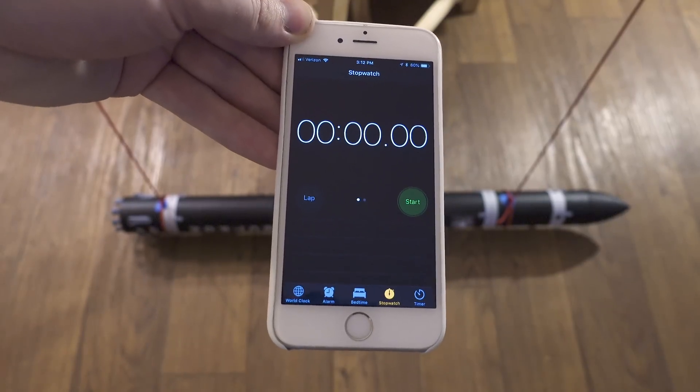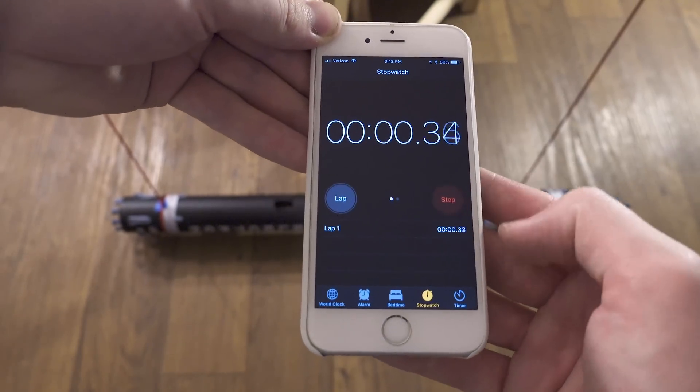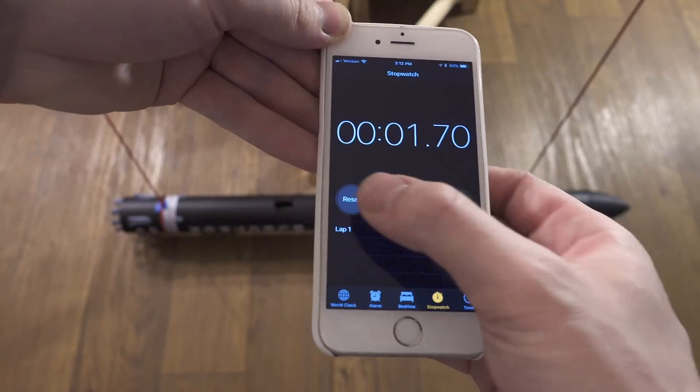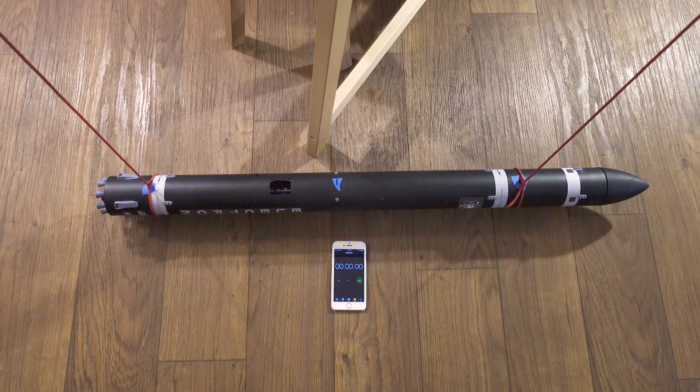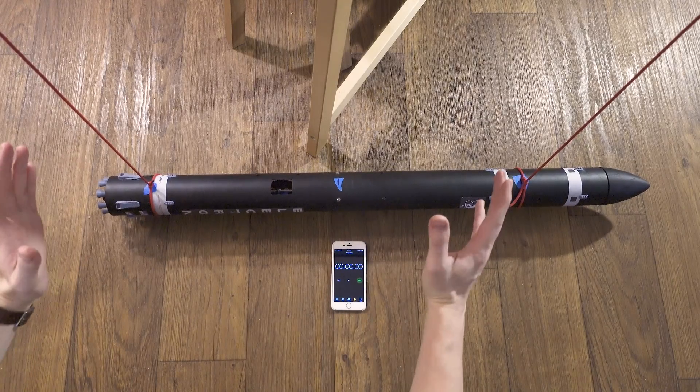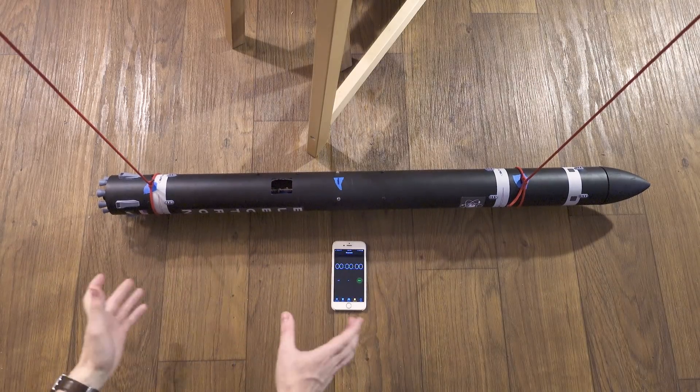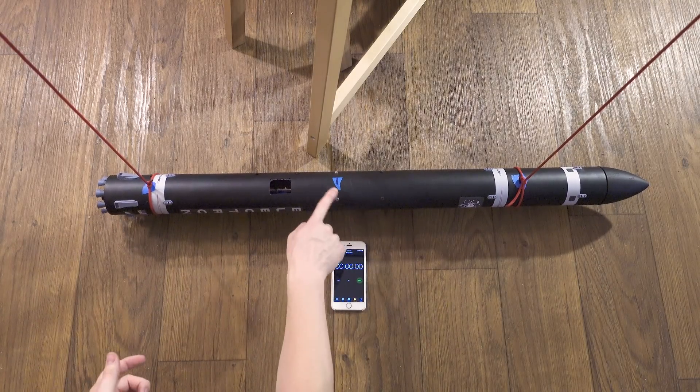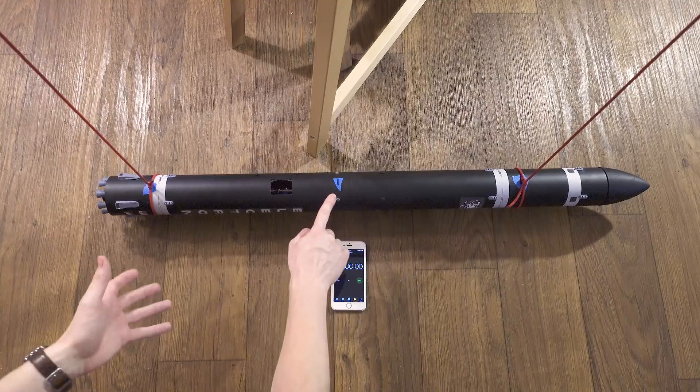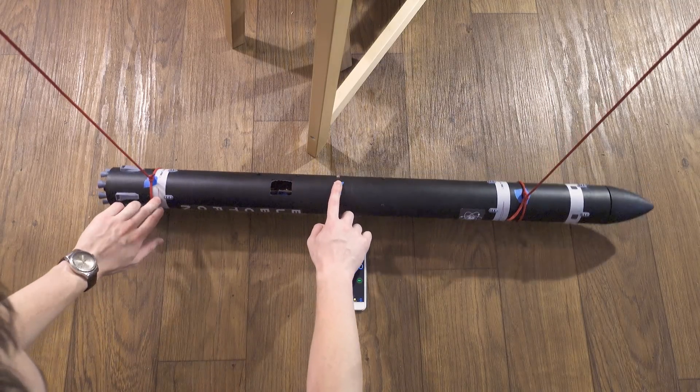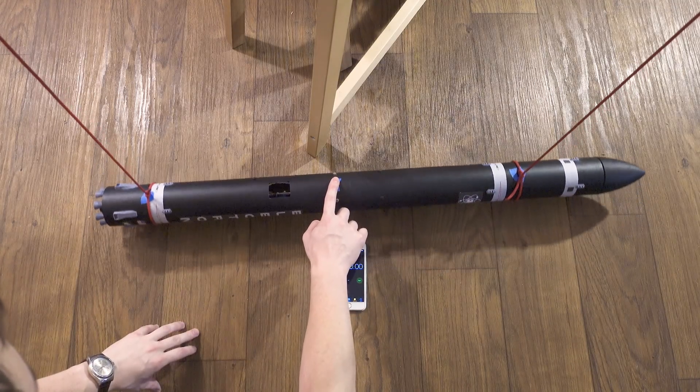Now we need a stopwatch. I'll be using my phone for this. We'll be measuring how long it takes for the rocket to swing back and forth a few times. So we have the rocket hanging from the strings here. We've got the timer ready to go, and we're going to rotate the rocket about its center of mass. This is the point that we marked earlier. I'm going to put my finger on it and then give it a little push just to start the rotation.